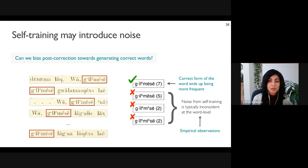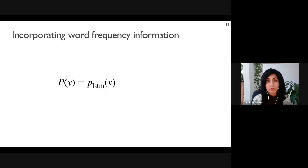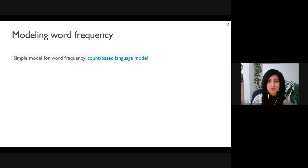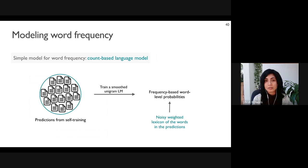This leads to the correct form of the word being more frequent than any of the incorrect forms, even if the word is incorrectly predicted more times in total. To counteract the noise from self-training, we develop a technique to use this frequency information to reinforce correct word forms during post-correction decoding. During the decoding process, the probability of the next character depends on the decoder LSTM, and we want to incorporate a probability based on word frequency. A very simple method that explicitly models word frequency is a count-based language model.